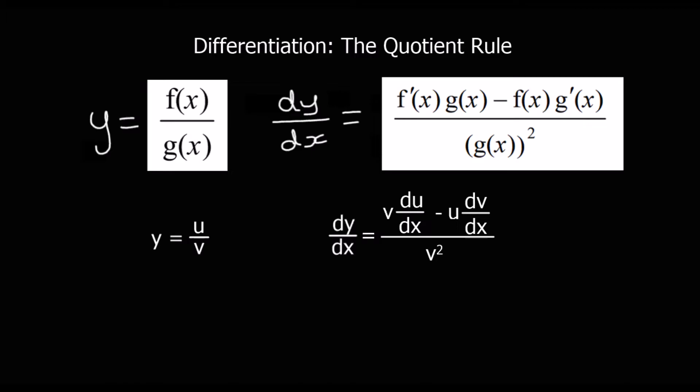This video is about differentiating using the quotient rule. We use the quotient rule to differentiate when we have one function divided by another function. So in terms of u and v, if we have one function u divided by another function v, we can use the quotient rule.